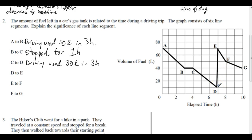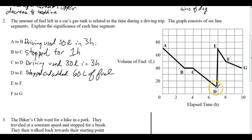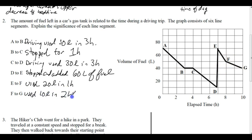D to E: all of a sudden the gas went from 10 liters to 70 liters, so we must have filled up — stopped and added 60 liters of fuel. There is some time for that stop. Then from E onward we're back on the road driving, and we used 20 liters in one hour — so we may have been driving faster, going through fuel at a greater rate. Then in the course of two hours, we used 10 liters. We get that information from the dependent variable: volume of fuel depends on the time, and each segment is expressed as a volume of fuel used over a time interval.